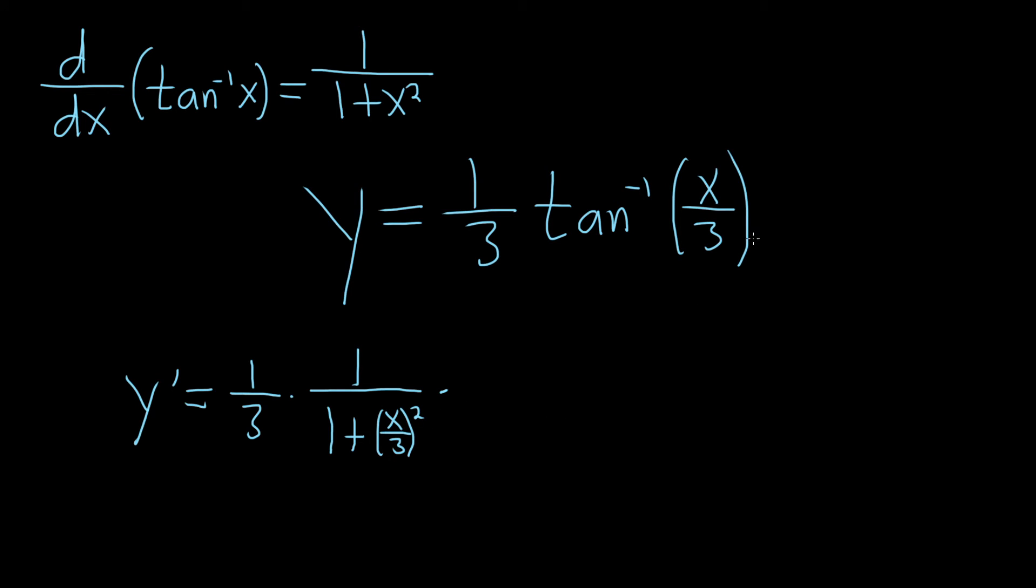So when you're differentiating x over 3, it helps a lot, I think, if you think of it as 1 over 3 times x. Because that way, you can take the derivative of x, which is 1, and then you just get 1/3 times 1, so you just get 1/3. So the derivative of x over 3 is just 1/3.